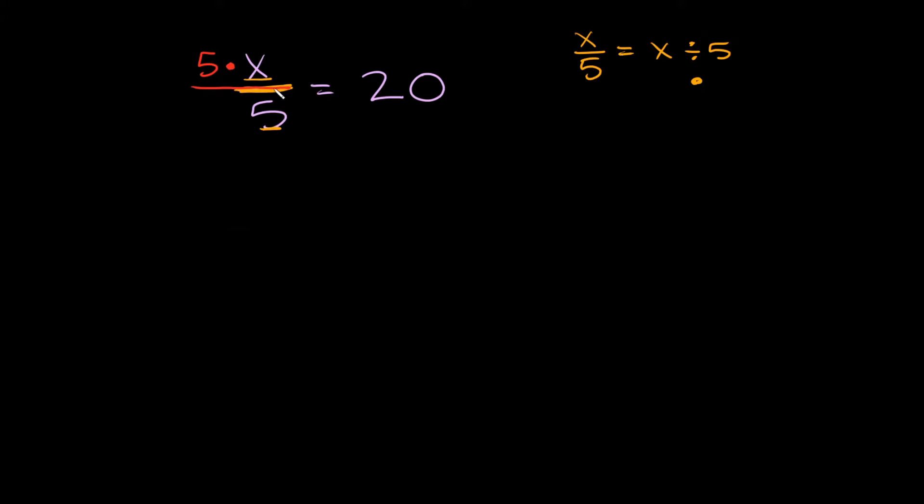Here's our fraction bar. We want to put the 5 on top. Why? Because we want it to cancel out with what's on the bottom. If I had x over 5 and multiplied by 5 on the bottom, this would just be x over 25. We still have this fraction bar and just a different number. So that didn't help us at all.